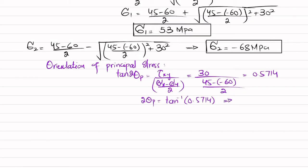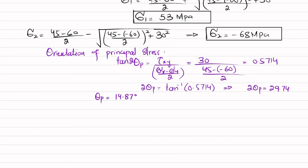So 2θ_p = arctan(0.5714), which gives 2θ_p = 29.74 degrees. Therefore theta_p1 = 14.87 degrees. Now, using the stress transformation equation, we will verify sigma 1 and sigma 2.